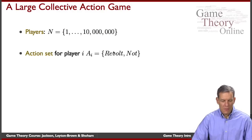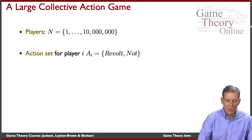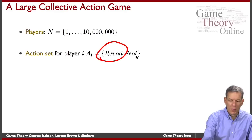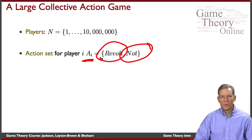What are their actions here? Let's keep it very simple. They have a choice here of either revolting or not. So their action set is just binary, two choices.